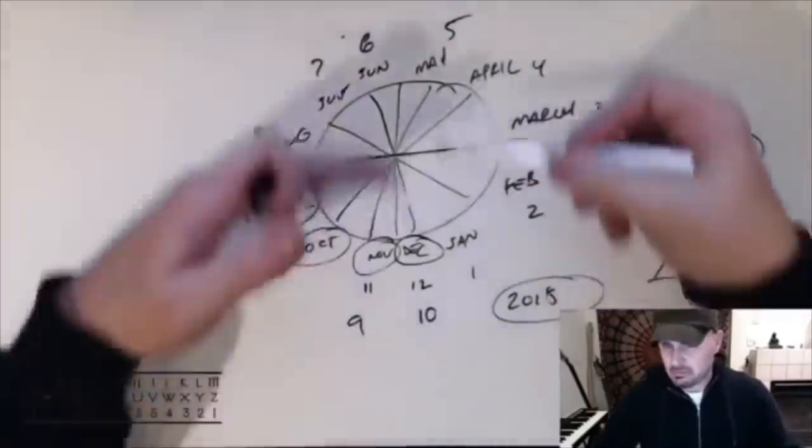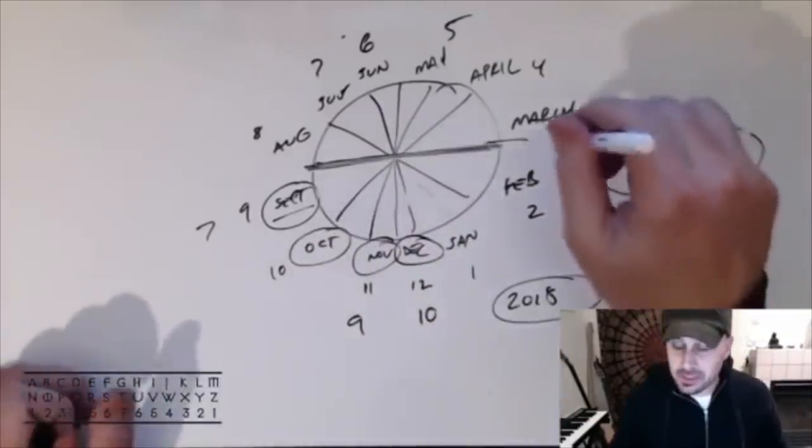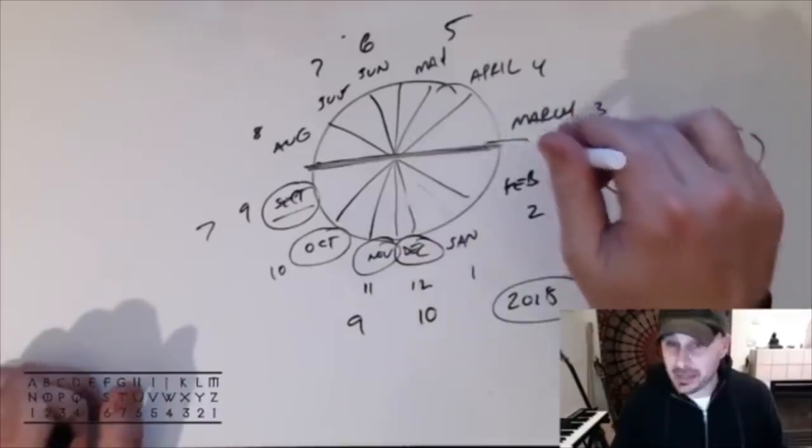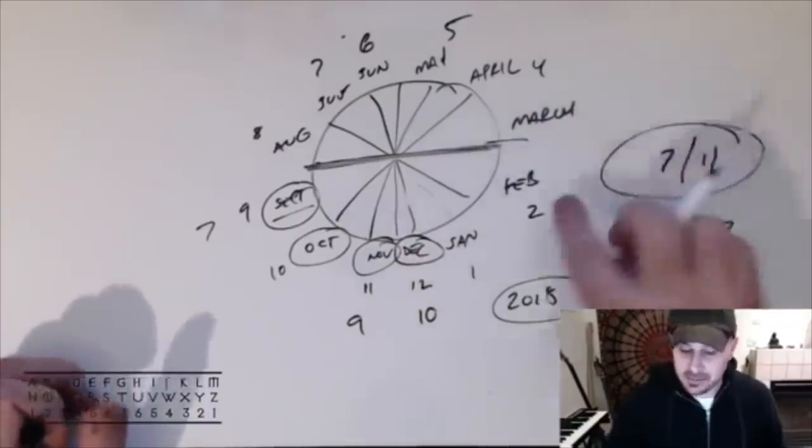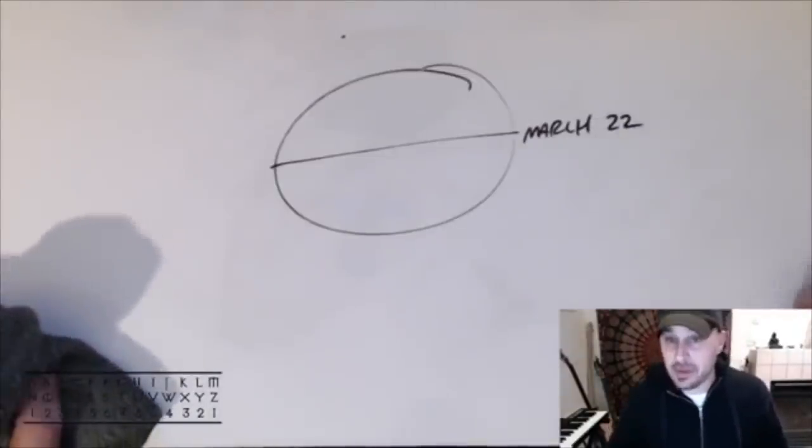And you know, designated by pi. Well the solstice, excuse me not the solstice, the spring equinox is on March 22nd. This year it's March 20th.